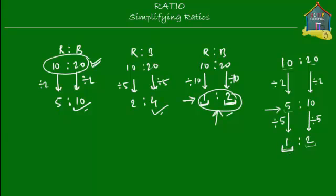Many times, one of the terms of a simplified ratio is not 1, and yet the ratio is fully simplified. The way to check is simply to see if there is a common factor that divides both terms of the ratio. If there is none, you have reached the simplified form. If there is one, keep simplifying until you cannot simplify any further — that is the simplest form of the ratio.